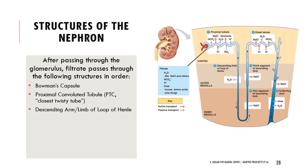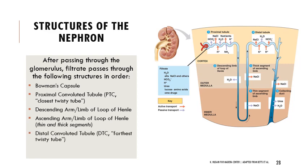The descending limb of the loop of Henle is permeable to water, while the ascending limb is not permeable to water. For the descending limb, it starts thicker and then gets thin. The ascending limb starts thin and then quickly gets thicker. Then we get into the distal convoluted tubule — distal meaning farther away — and then after that, the collecting duct.